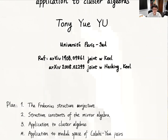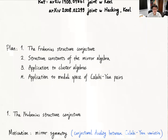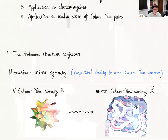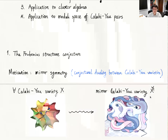Let's start with the first part: what is the Frobenius structure conjecture? The motivation comes from mirror symmetry, which is a conjectural duality between Calabi-Yau varieties. Roughly, mirror symmetry says that for any Calabi-Yau variety X there is some mirror Calabi-Yau variety X-check such that there are lots of geometric relations between them involving Hodge theory, Gromov-Witten invariants, derived categories of sheaves, and so on.